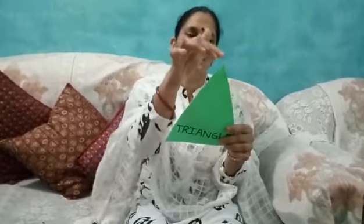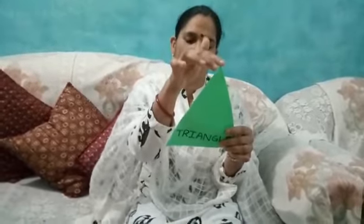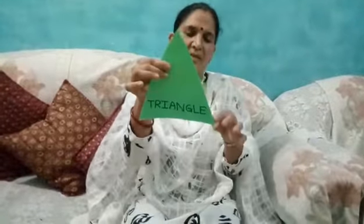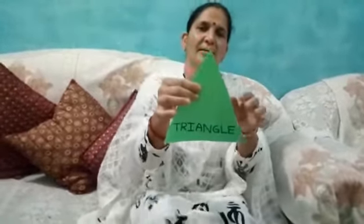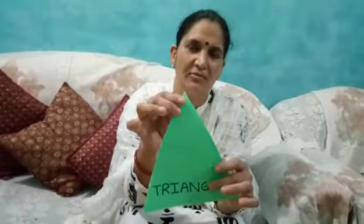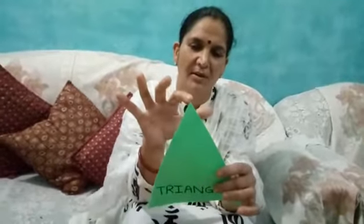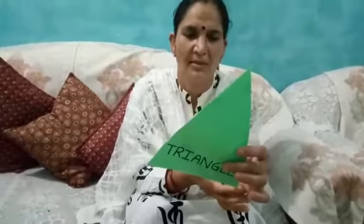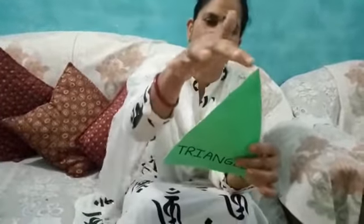It has three corners and three sides. One, two, three. How many sides? Three. How many corners? Three. Count with me — one, two, three. Three sides.